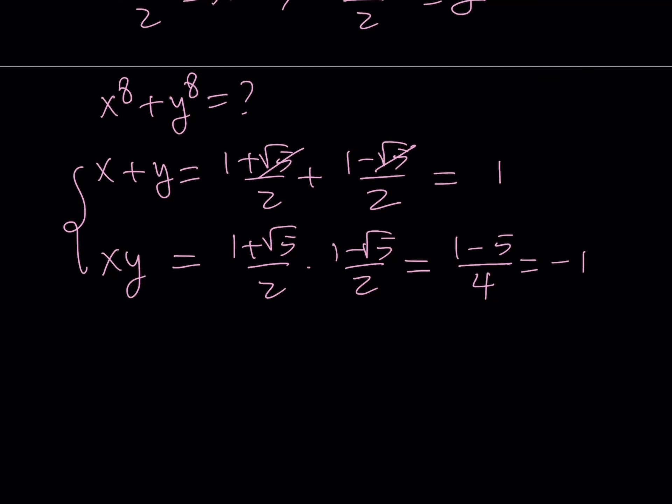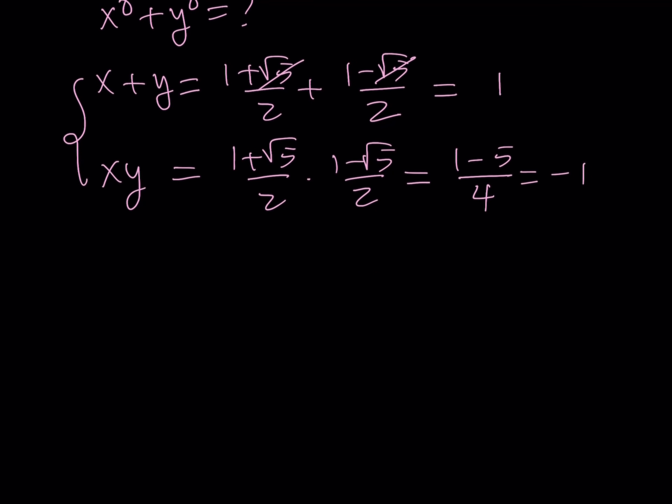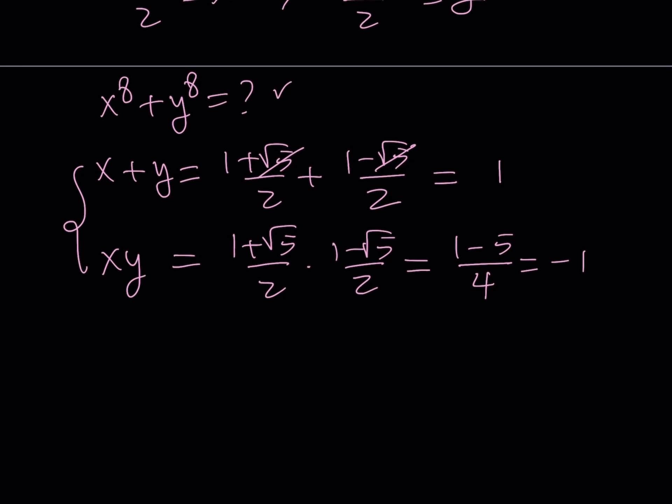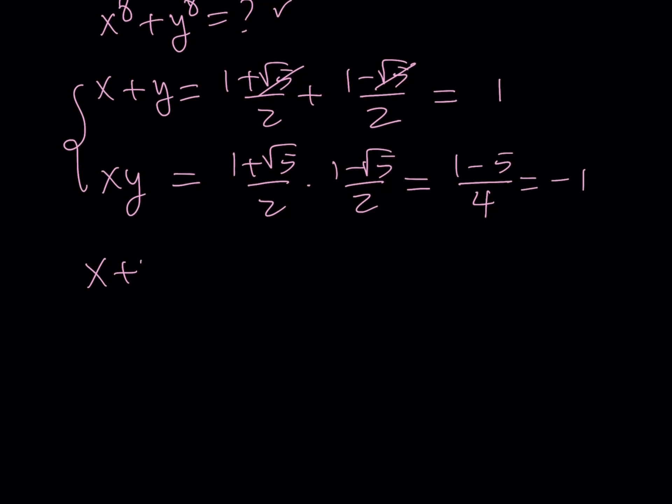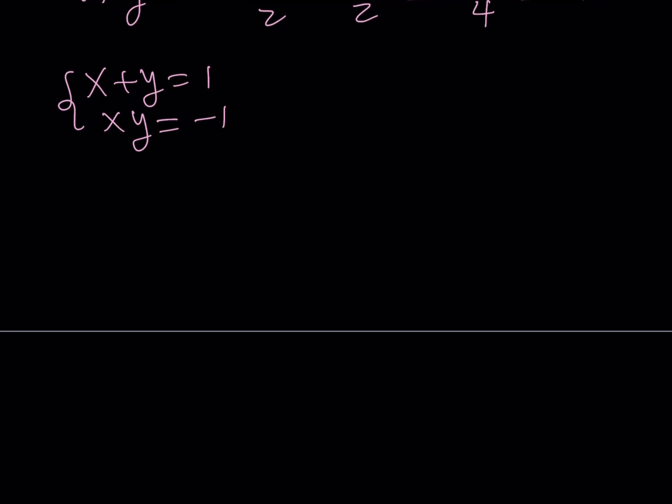I kind of have a system of equations. And from that, I want to find the sum of the 8th powers. I have x plus y equals 1 and xy equals negative 1. You can set up a quadratic equation and solve for x and y, but you don't need to because we already know what x and y are. Our goal is to find x to the 8th power plus y to the 8th power. And here's what we're going to do.